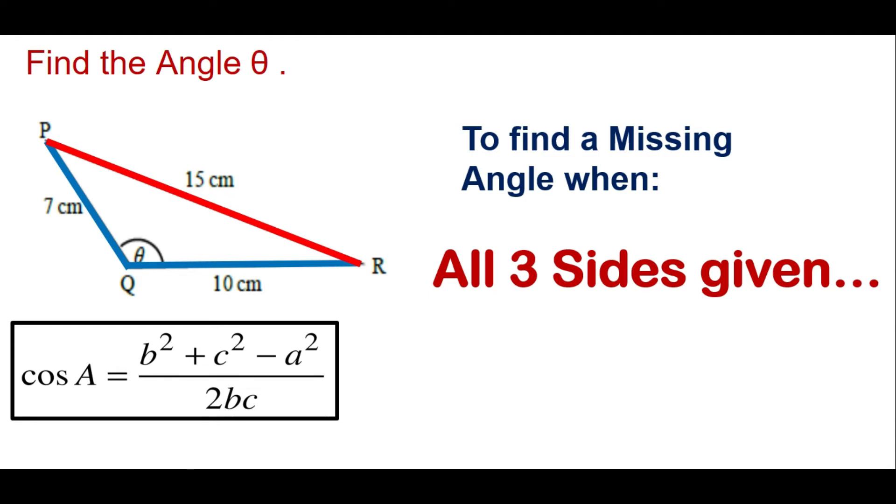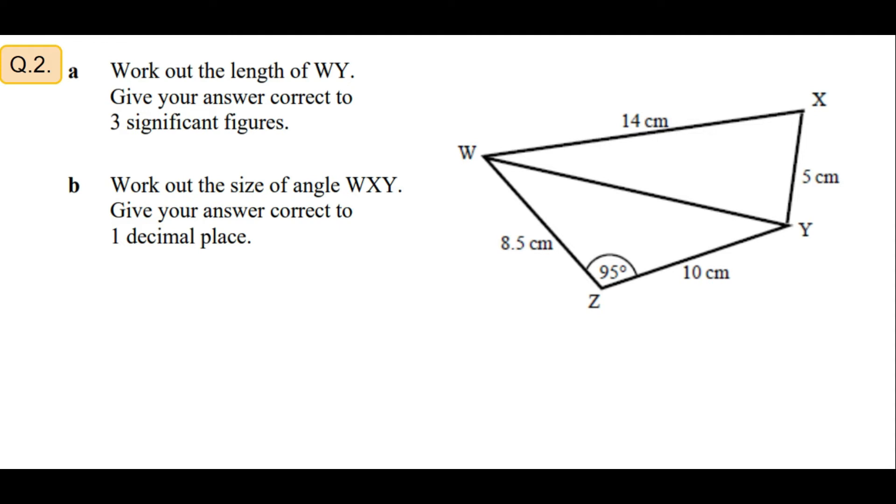Now we'll see an example where we use the cosine rule to find a missing length. Moving on to question 2. Question 2 you have part a and part b. Work out the length of WY. Keep your answer correct to three significant figures. Now you can see WY is a line that is a part of both these triangles, you have WXY and WZY. So from which triangle can you start? To start with WXY you can see this is not a right angle triangle so you cannot apply any Pythagoras theorem or any sine, cosine, tan functions. So we have to come back to this triangle which is WZY.